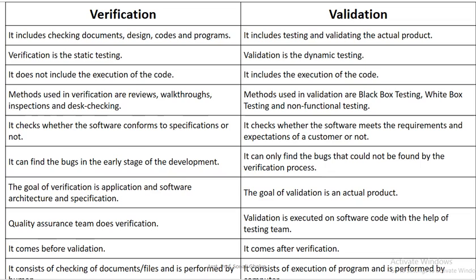Verification does not include the execution of code. In validation, we need to execute the code because we are checking the actual output of the program. Methods used in verification are reviews, walkthrough, inspection, and text checking. But in validation, we use BBT — black-box testing — white-box testing, and non-functional testing.